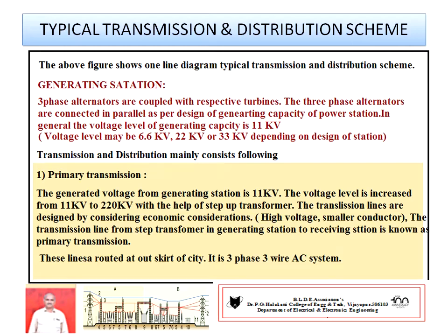Number two: primary transmission. The generated voltage from the generating station is 11 kV, which is then boosted to 220 kV. Electrical power is then transmitted on three-phase transmission lines at 220 kV, because the voltage is increased in the generating station itself by a step-up transformer. This 220 kV is routed on transmission lines whose towers exist on the outskirts of the city. These lines run from the generating station to the receiving station, and are called primary transmission lines. These are generally a three-phase, three-wire system.